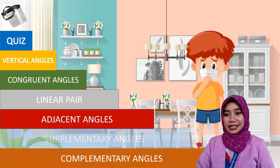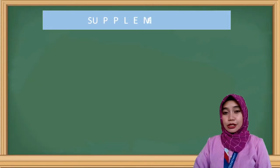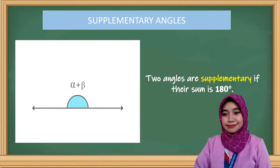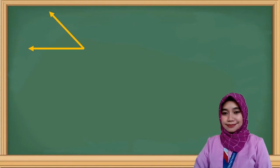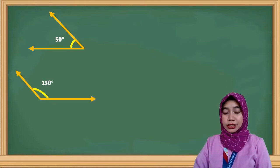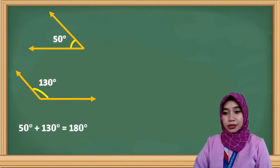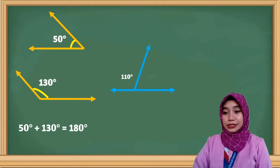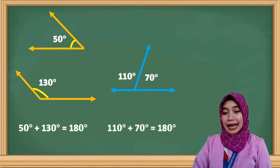Next, let's proceed with supplementary angles. Two angles are supplementary if their sum is 180 degrees. For example, we have a first angle of 50 degrees and a second angle of 130 degrees. If we add 50 degrees plus 130 degrees, the sum is 180 degrees. Hence, these two angles are supplementary. Next, we have 110 degrees as the first angle and 70 degrees as the second angle. If we add these two, we get 180 degrees. Therefore, these two angles are supplementary.